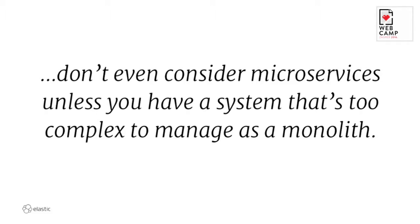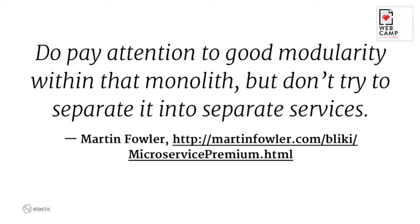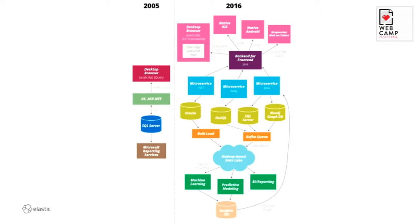Don't even consider microservices unless you have a system that's too complex to manage as a monolith — the majority of projects should not be started like that. But still pay good attention to modularity. That's Martin Fowler. He also wrote a very nice blog post describing the different architectures. On the left hand side, 2005 stuff was pretty simple — you could grasp it or keep it in your head pretty easily. The right hand side is just a little more complex.